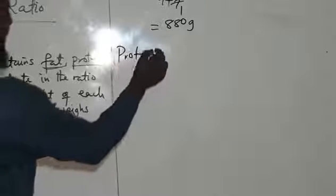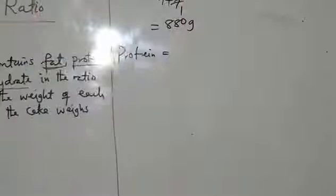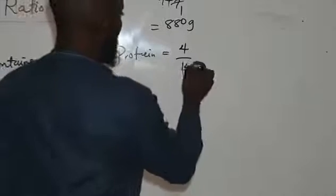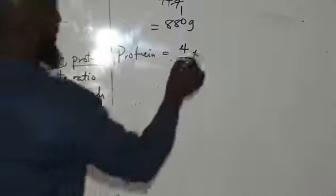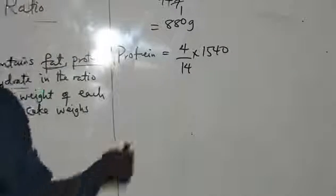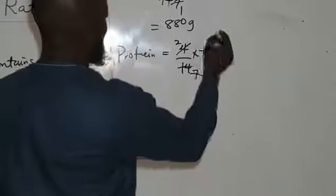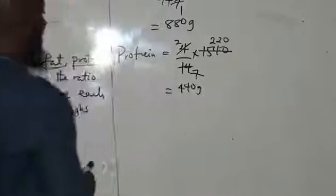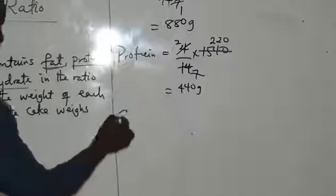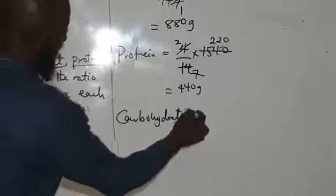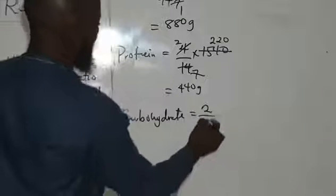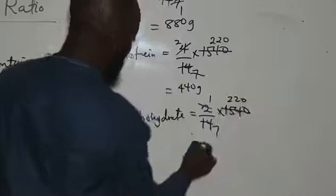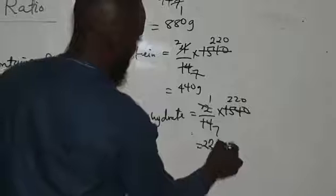Protein carries a ratio of 4. So protein is 4 divided by 14, multiplied by 1,540. Simplifying: that gives us 220 multiplied by 2, which is 440 grams. Carbohydrate carries a ratio of 2. So carbohydrate is 2 divided by 14, multiplied by 1,540. Simplifying gives us 220 grams. So carbohydrate weighs 220 grams in the cake.